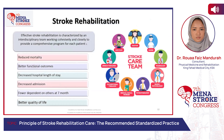Effective stroke rehabilitation is characterized by an interdisciplinary team working cohesively and closely to provide a comprehensive program for each patient — to reduce mortality, achieve better functional outcomes, decrease hospital length of stay and admissions, reduce dependence on others at seven months post-stroke, and improve quality of life. The interdisciplinary team includes the patient, family, caregiver, attendant, physician, nursing, physiotherapy, occupational therapy, speech-language pathology, psychologist, nutritionist, and social worker.